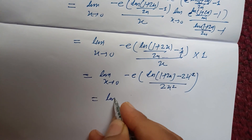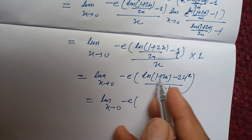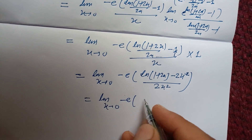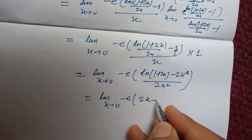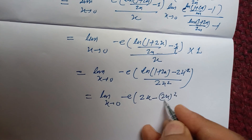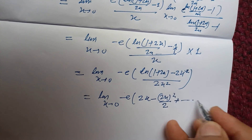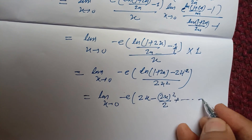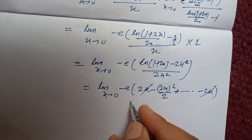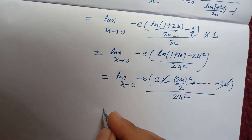Now expanding ln(1+2x) using Taylor series: ln(1+2x) = 2x - (2x)²/2 + ... Substituting: (2x - 2x²/2 + ... - 2x) divided by 2x². The 2x terms cancel, leaving -2x² upon 2x².